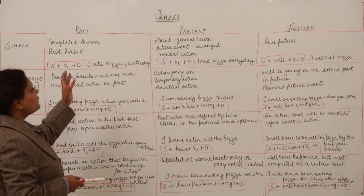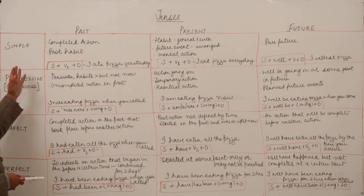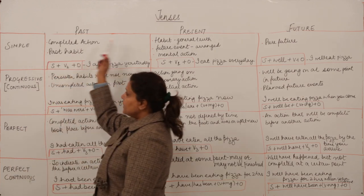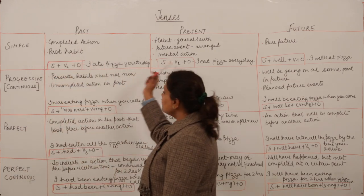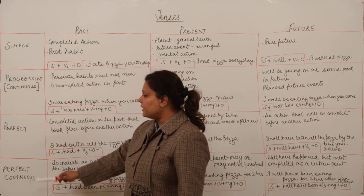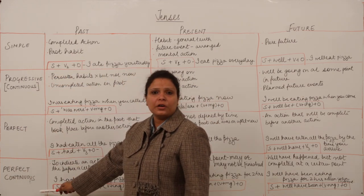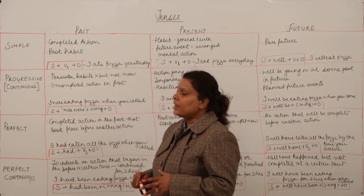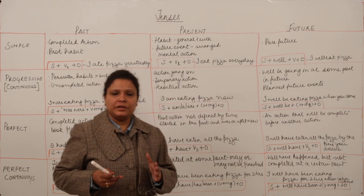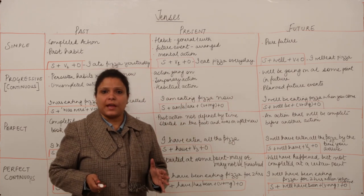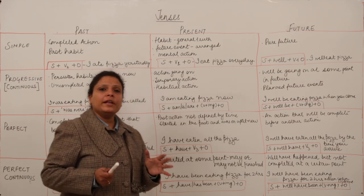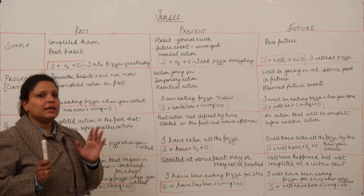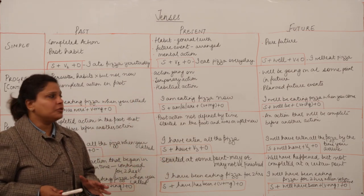The tenses are further divided into four parts: the simple, the present or progressive, the progressive, the perfect, and the perfect continuous. So in effect we have 12 divisions of time according to which we can place the action and assign a tense to it.